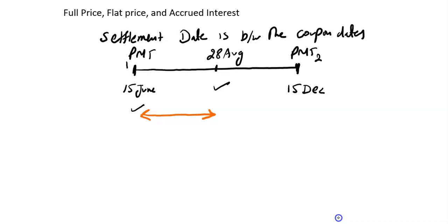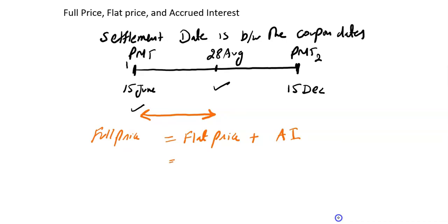So we can say that flat price is without accrued interest and full price includes the interest. If we know the flat price plus the accrued interest, we can calculate the full price. Conversely, if you have the full price and subtract the accrued interest, you can calculate the flat price.